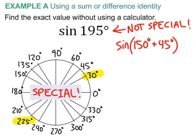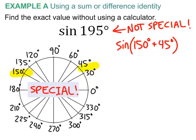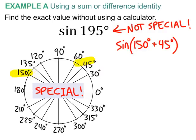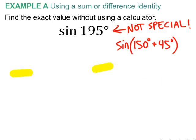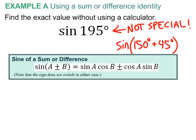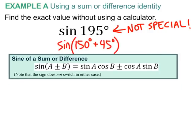But let's just go with the first one that we had there, the 150 degrees and 45 degrees being added. And let's see how this works. I'll bring up the formula here as a reminder. And so, again, we rewrite sine of 195 degrees as the sum of two special angles. It always has to start that way, or the difference.